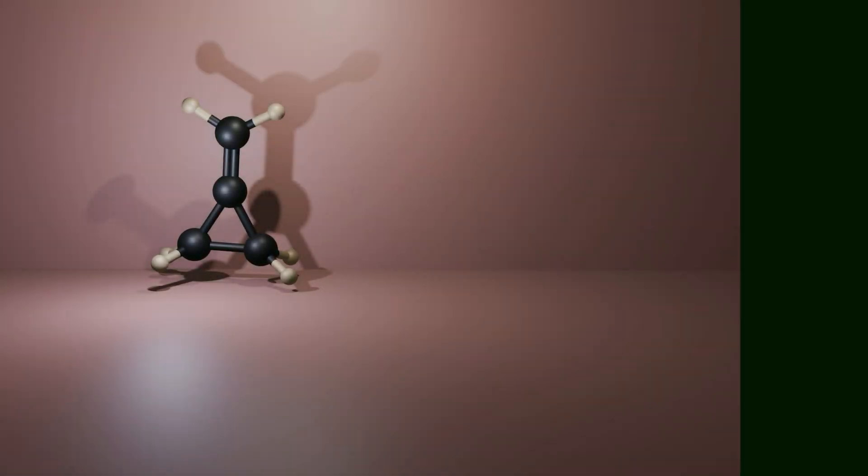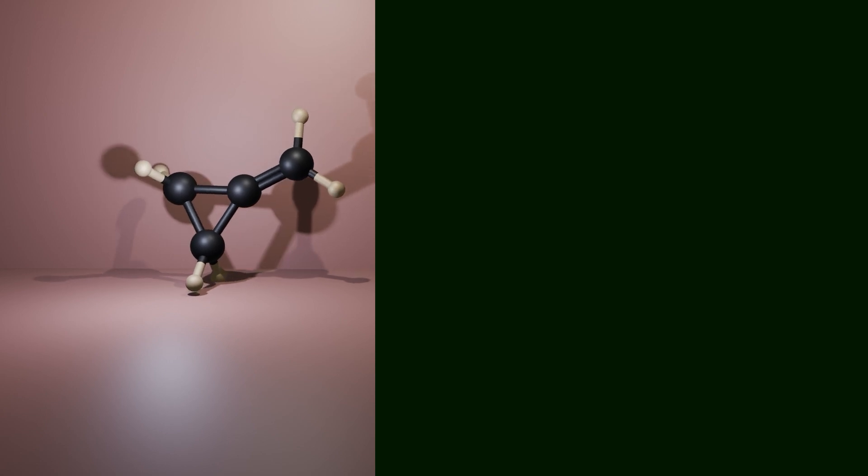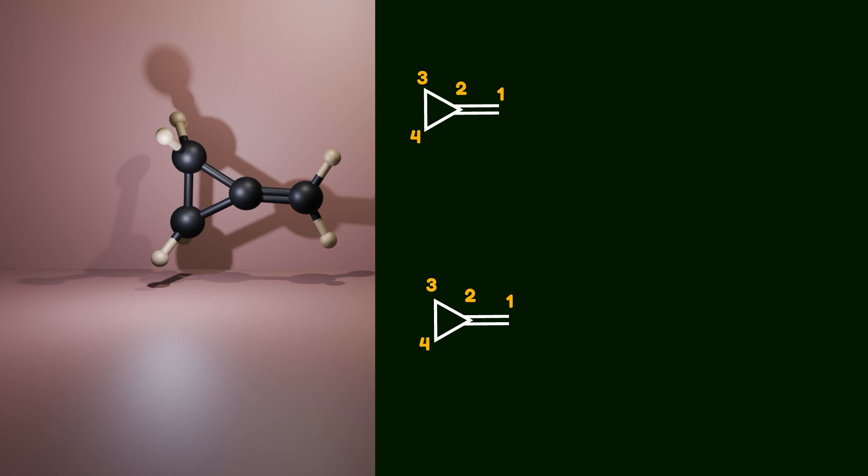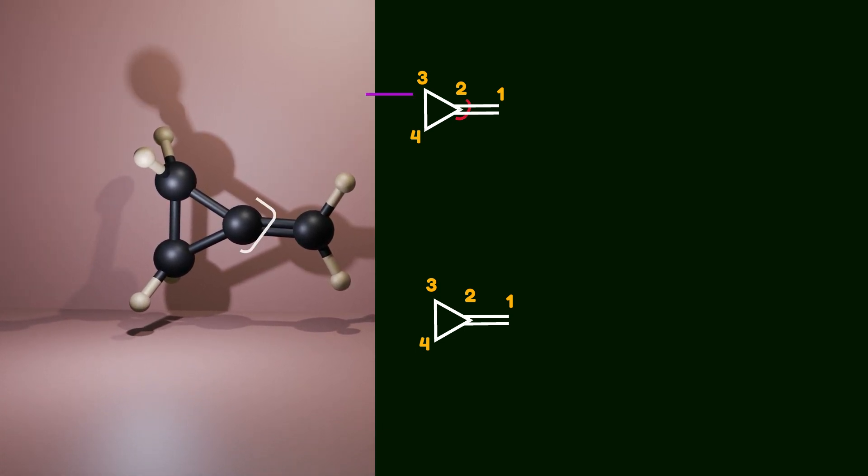Now let's examine the reactivity pattern of alkylidine cyclopropane with transition metals. The three-membered ring can be cleaved in two distinct ways, based on the distance from the double bond. There are two bonds within the three-membered ring. The C2-C3 bond is referred to as the proximal bond because it's closer to the double bond, while the C3-C4 bond is considered the distal bond.